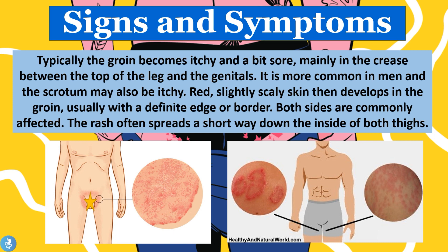The signs and symptoms of jock itch: typically, the groin becomes itchy and a bit sore, mainly in the crease between the top of the leg and the genitals. The disease is more common in men and the scrotum may also be very itchy. Red, slightly scaly skin then develops in the groin, usually with a definitive edge or border. The rash is very red, scaly, and quite itchy and uncomfortable for the patient. Both sides are commonly affected — the infection may start on one side and then spread to the other — and the rash often spreads a short way down the inside of both thighs.